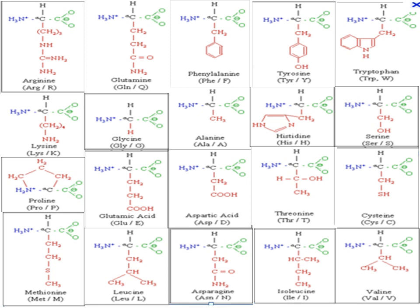Thus, in all 20 amino acids, we see that all of them invariably have an amino group shown in blue attached to the alpha carbon atom, a carboxylic group shown in green attached to the alpha carbon atom, and a hydrogen atom also attached to the alpha carbon atom. Only the variable alkyl group differs — just a variation in this alkyl group brings about so many varieties of amino acids. In nature, we have 20 different amino acids, each having its own unique structure and property.